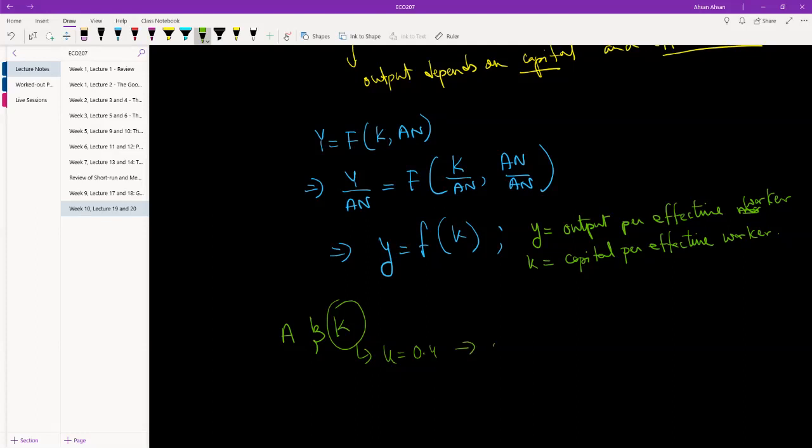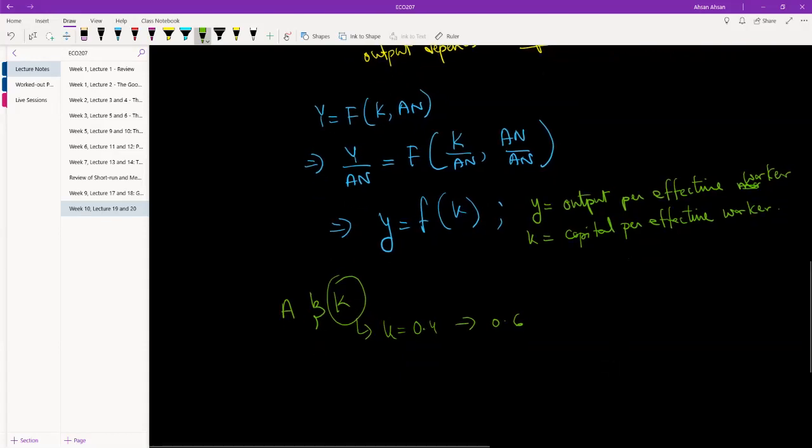If the ratio goes up and this becomes 0.6, that's when capital is going up. We're saying previously 40 percent people used to have laptops in Bangladesh, now 60 percent people have laptops in Bangladesh. That's when capital is improving. When technology improves, what that means is suppose you guys were using laptops with four gigabytes of RAM.